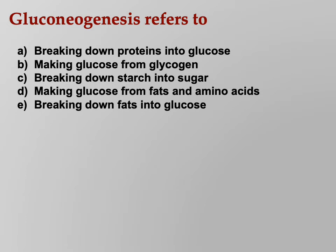Gluconeogenesis refers to what? The answer is making glucose from fats and amino acids — making new glucose, not from existing carbs of any kind. You're making glucose from non-carbs.